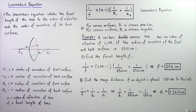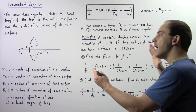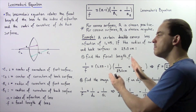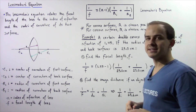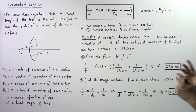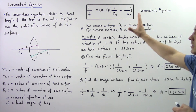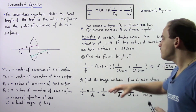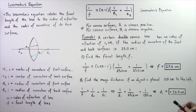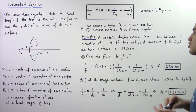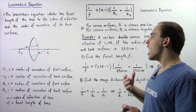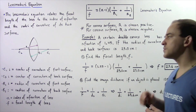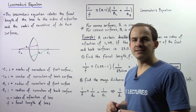The positive image distance means the image is on the opposite side of the lens compared to where the light is coming from and where the object is placed. We can see that the lens maker equation is very useful when calculating the focal length, given the index of refraction and the radii of curvature of the two surfaces of a lens.